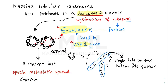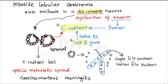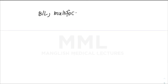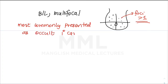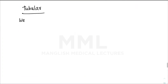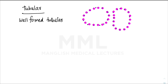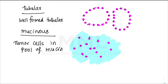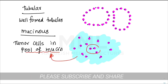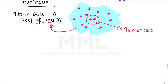Invasive lobular carcinoma has a special metastatic spread called carcinomatous meningitis. It is mostly bilateral and multifocal — multiple foci of cancer in a single breast — and most commonly presents as a primary occult cancer. Another special type is tubular carcinoma, characterized by well-formed tubules. Mucinous carcinoma features tumor cells present in a pool of mucin.